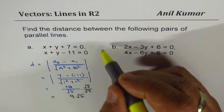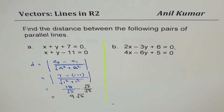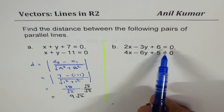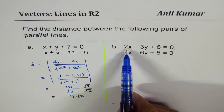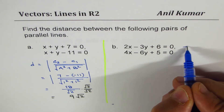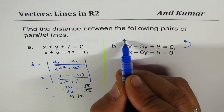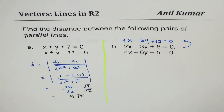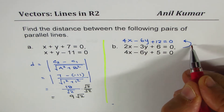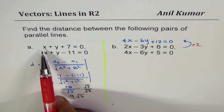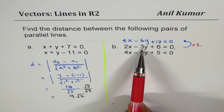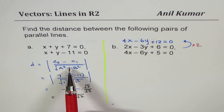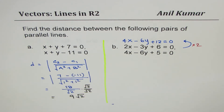That is the distance between the first set of lines. Now let's look at the second set. They don't seem to be parallel, but they are — if I multiply the first equation by 2, I get 4x - 6y + 12 = 0. Now you can clearly see that both lines have the same normal vector, so they are parallel lines.